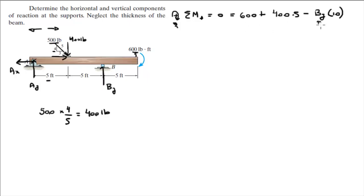So as you can see, we only have one variable By. When you solve for it with some basic algebra, you get that By is equal to 260 pounds.